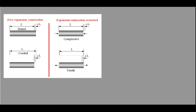Let's look at some practical problems with change in temperature. Here you can see there is a bar of length L, and when it is heated its length increases. Similarly, when it is cooled its length decreases. But now if this free expansion is restricted — suppose a bar is fixed from the ends and we heat it — it will try to expand, but the wall restricts its expansion, and due to that it will develop compressive stress.